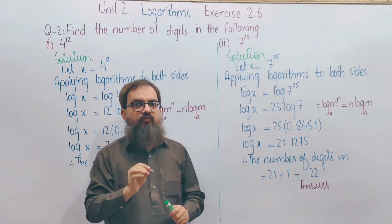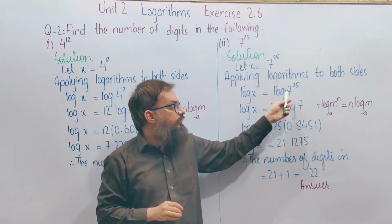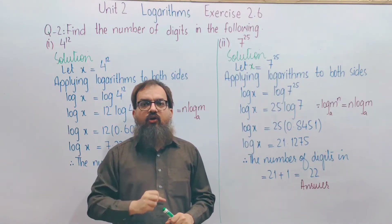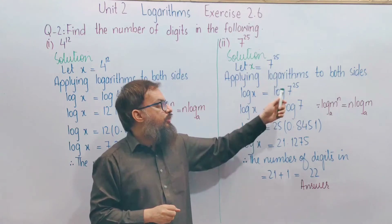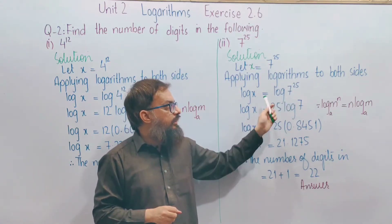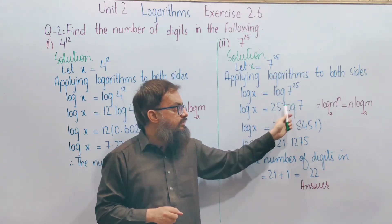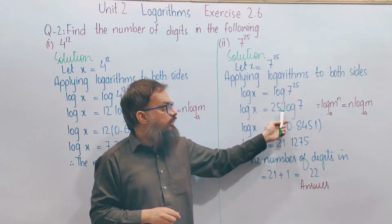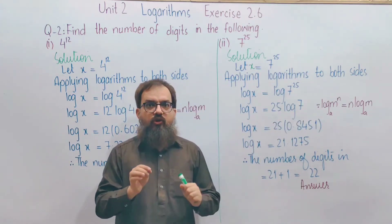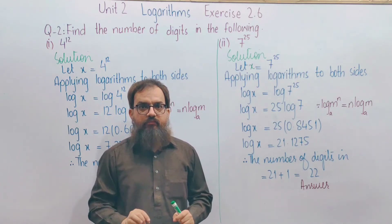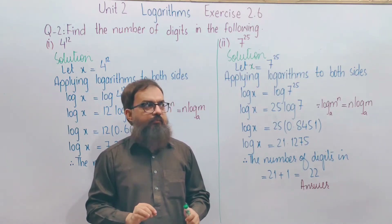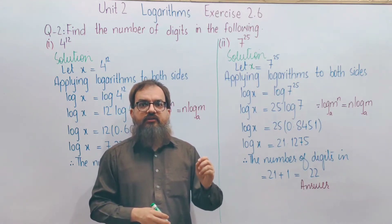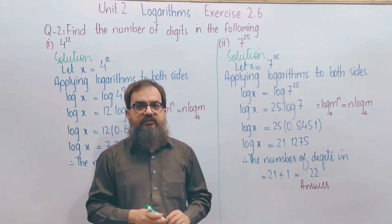After applying logarithms, the laws of logarithm will be applied. Here, which law applies? For 7 to the power 25, the 3rd law of logarithm applies — the exponent 25 is brought to the front and multiplied. We have noted the reference to the 3rd law of logarithm here. Now we need to find log 7 from the log table.